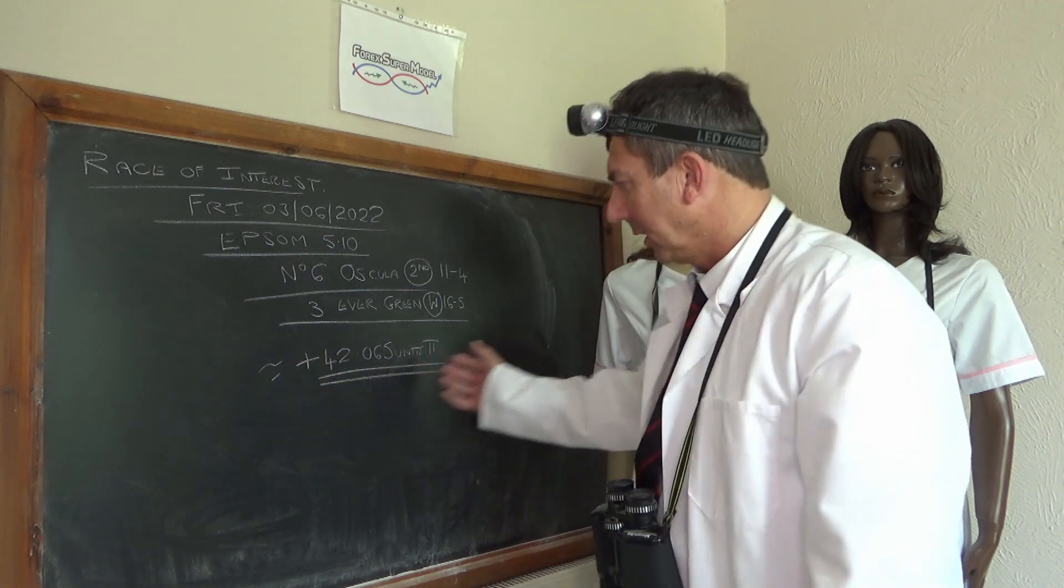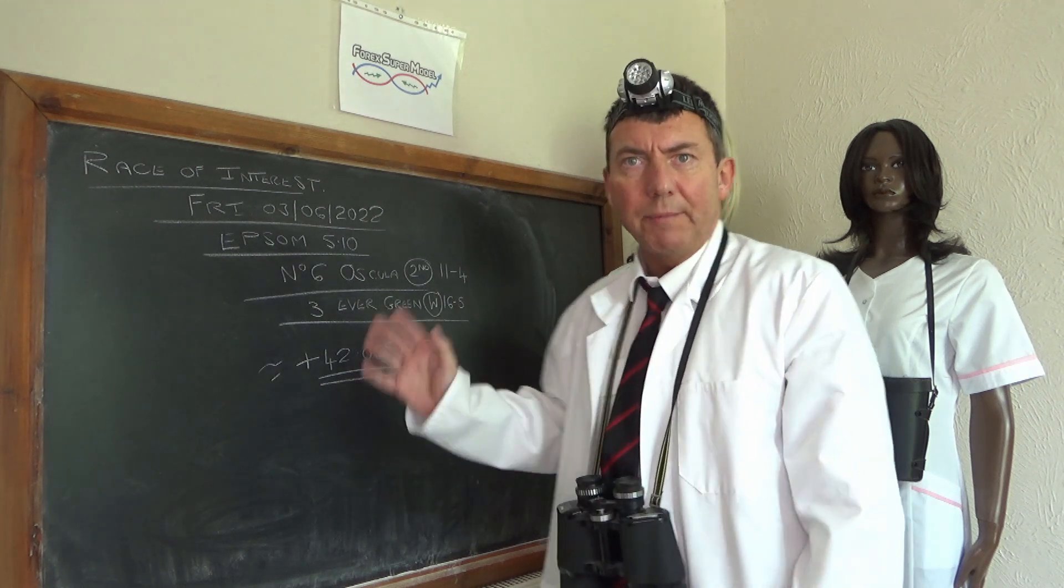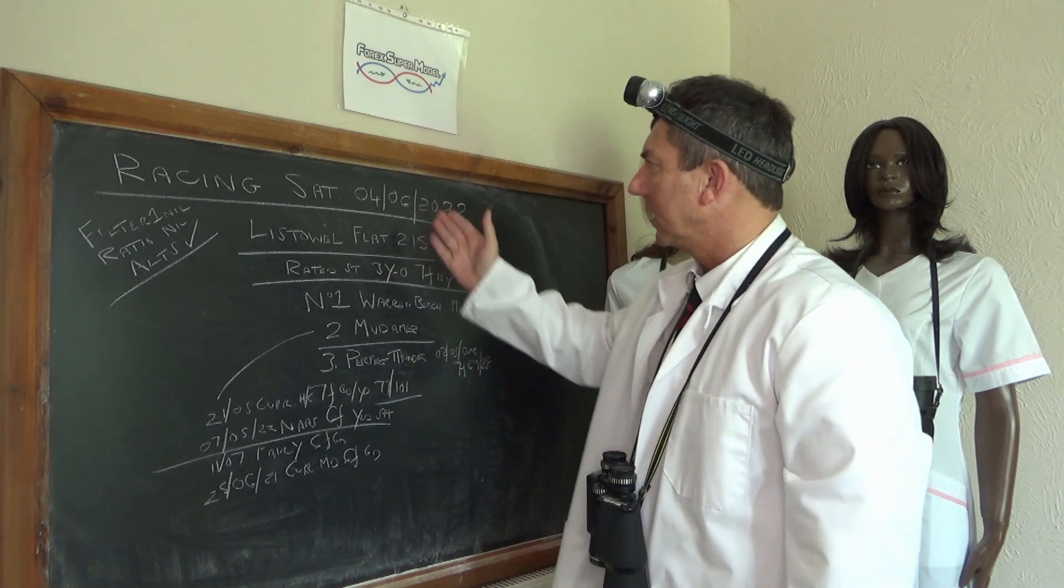The account was static because we didn't bet, it was 42.065 units in profit overall. So we'll stop it there and we'll ride up to today's racing.